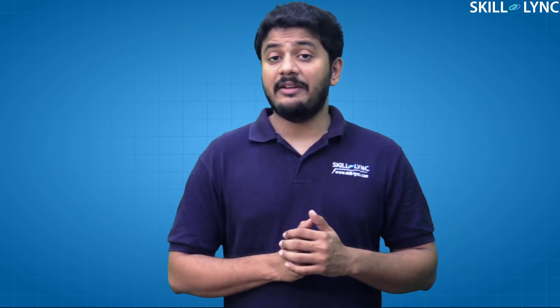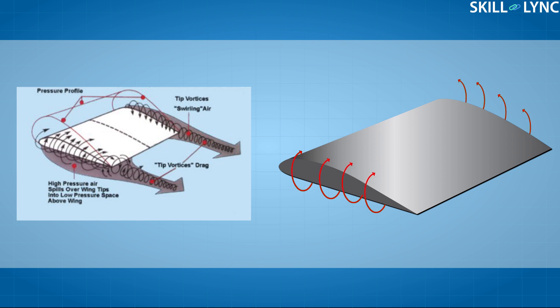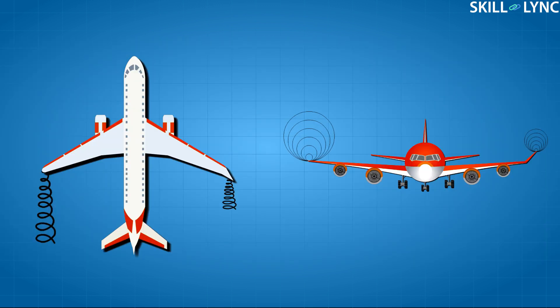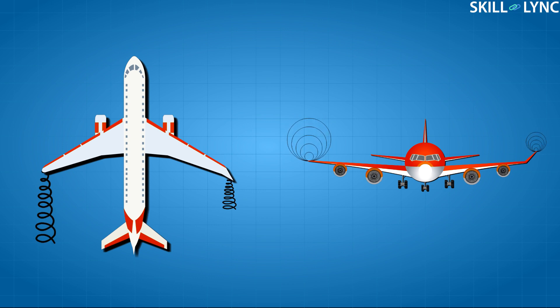Whenever there is a pressure differential, the system always tries to equalize it. Because of this pressure difference in the aircraft wing, the high pressure air from the downside tries to move over to the upside by lateral flow away from the fuselage. This creates vortices on the tip of the wing, also called wingtip vortices.